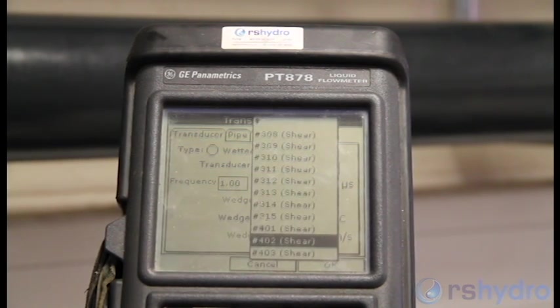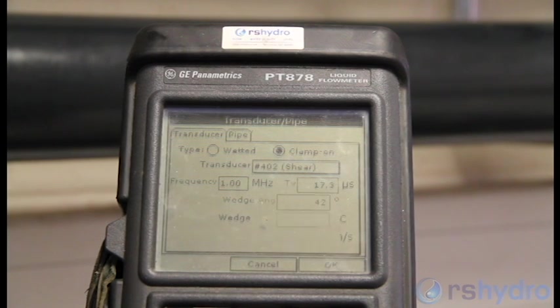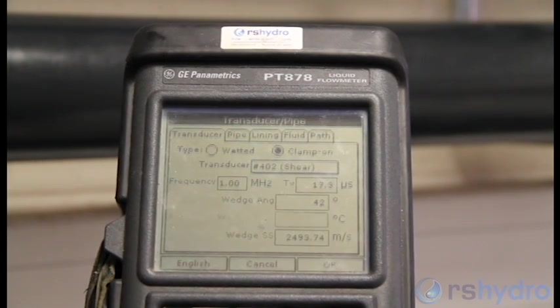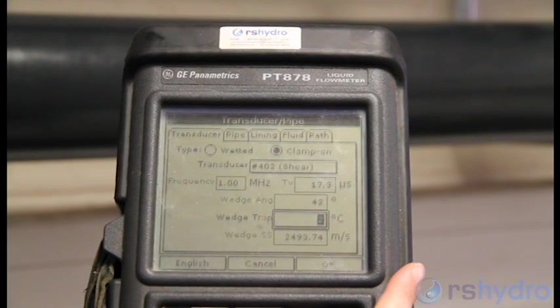Select 402 from this list, press enter, and scroll down to the wedge temperature, which is the ambient temperature. In this case, about 20 degrees.